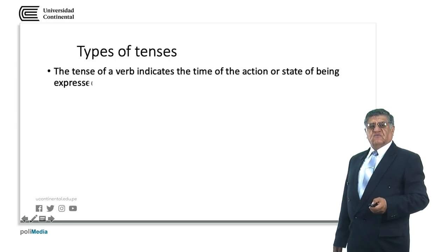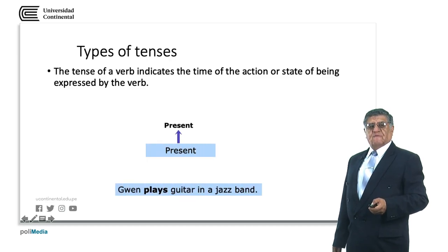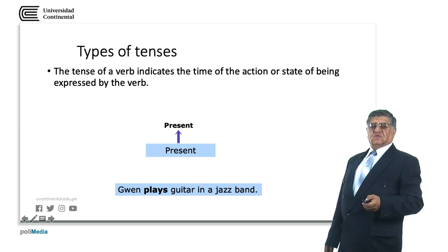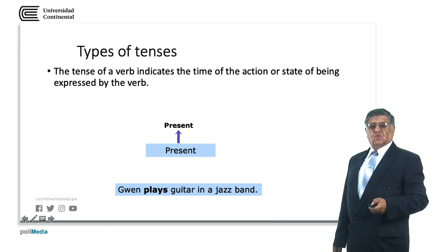The tense of the verb will indicate the time of the action and the state of being. In the present, we have two forms: the infinitive and the third person singular form. For example, she plays guitar in a jazz band — plays is the third person singular form.